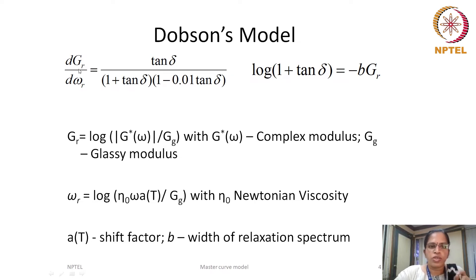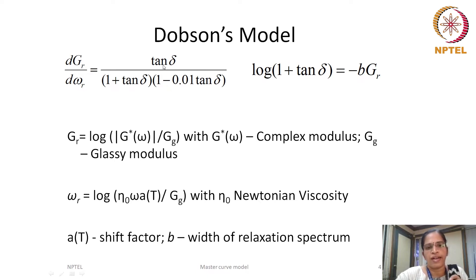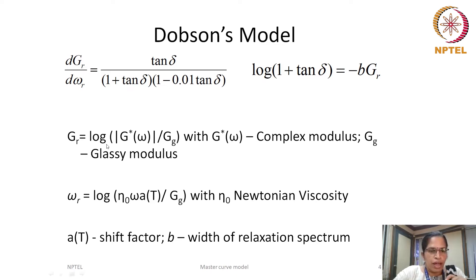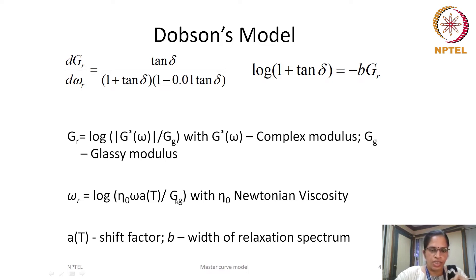In the first assumption, the slope of the relative dynamic modulus GR with respect to reduced frequency is dependent on tan delta. GR is the ratio of dynamic modulus measured at any frequency to the glassy modulus in logarithmic scale. Omega r is the reduced frequency which depends on the experimental frequency, shift factor, zero shear viscosity eta naught, and the glassy modulus gg.